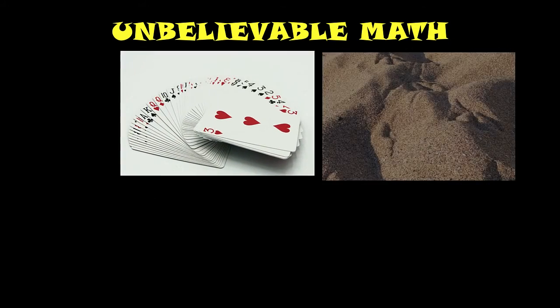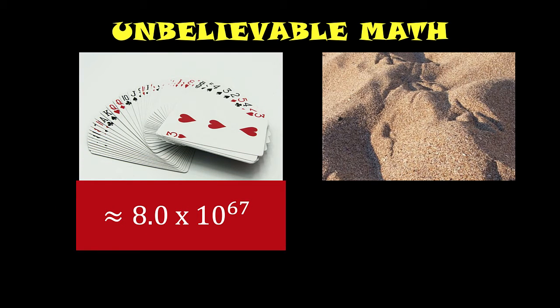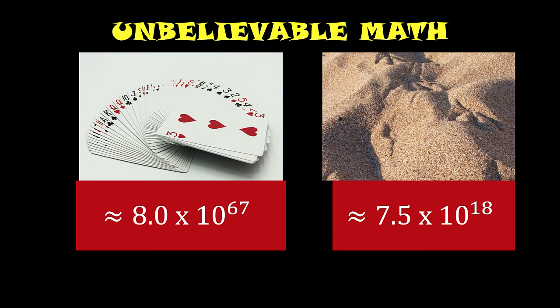So comparing now the two, for the permutation of 52 cards taken 52 at a time, that is approximately 8 × 10^67, while the approximate number of grains of sand is approximately 7.5 × 10^18.